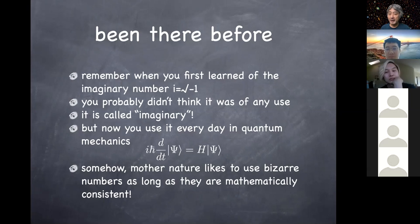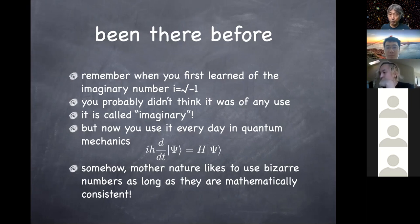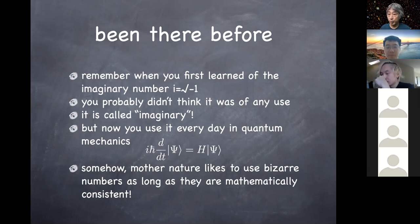Depending on whether an object is Grassmann even or Grassmann odd — commuting or anti-commuting — you have a different set of quantum systems. So that's something you didn't know before, but now you do, and you should ask that question every time you see a Hamiltonian.